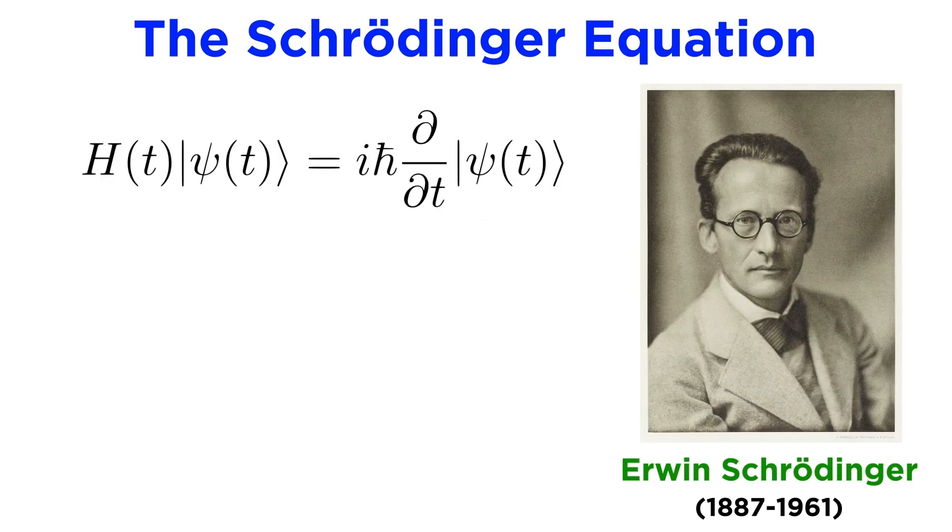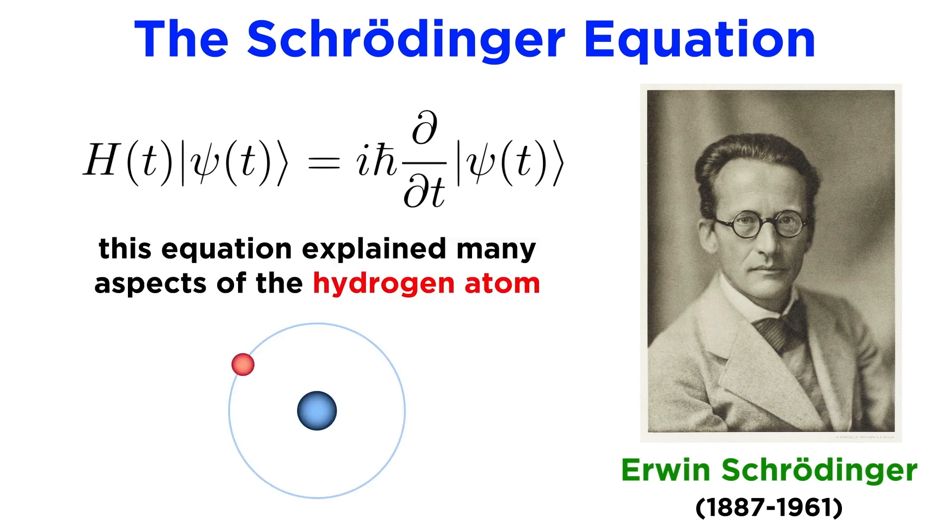Once it was understood that particles like electrons were also waves, effort was put forth to find a mathematical model that could describe the wave-like behavior of electrons. Erwin Schrödinger extended the work of de Broglie by incorporating his de Broglie relation into his own wave equation called the Schrödinger equation, and when he applied his equation to the hydrogen atom, it was able to reproduce a lot of the known values without having to invoke any extraneous assumptions. Quantization was a natural consequence of the wave equation.